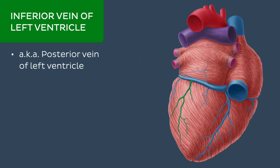The next tributary is the inferior vein of the left ventricle, also known as the posterior vein of the left ventricle. This cardiac vein can be found on the inferior surface of the left ventricle. It drains the inferior and lateral walls of the left ventricle into the coronary sinus.